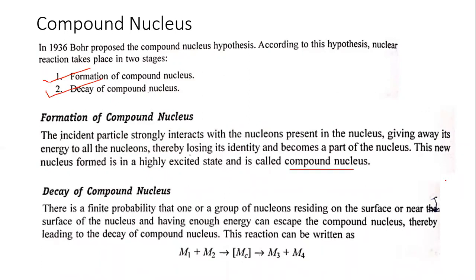There is a finite probability that one group of nucleons residing on the surface or near the surface of the nucleus, and having enough energy, can escape from the Compound Nucleus, thereby leading to the decay of the Compound Nucleus. So we write: M1 plus M2 gives a Compound Nucleus, which decays to M3 and M4.